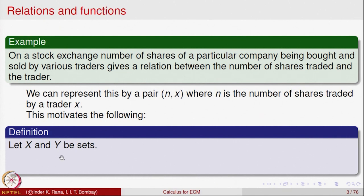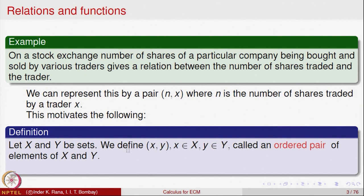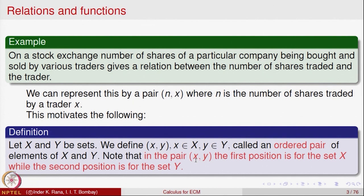Let us define mathematically: let x and y be two sets. Then we define (x, y) in round brackets, where x belongs to the set X and y is an element of the set Y. Such an object is called an ordered pair of elements of X and Y. The positions of x and y in this pair are ordered — the first position comes from X and the second position comes from Y. That is why this is called an ordered pair.